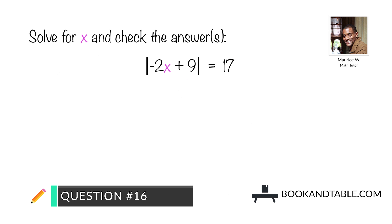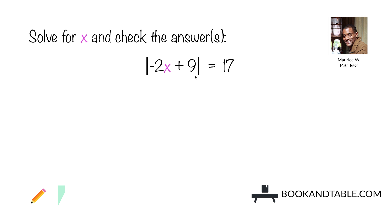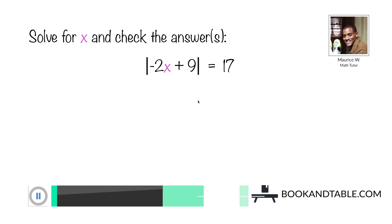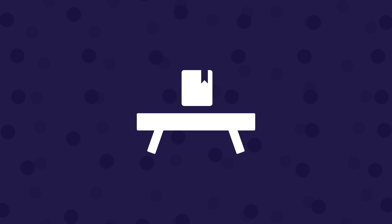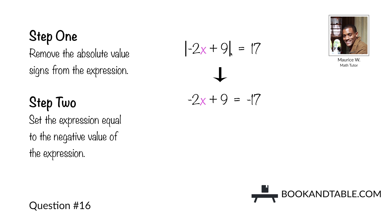Hopefully you're picking up on how to solve these absolute value equations. Question number sixteen: solve for x and check the answers. The absolute value of negative 2x plus 9 is equal to 17. Remove the absolute value signs, leaving us with negative 2x plus 9. Step two: set the expression equal to the negative value, so instead of positive 17, we first solve for negative 17.